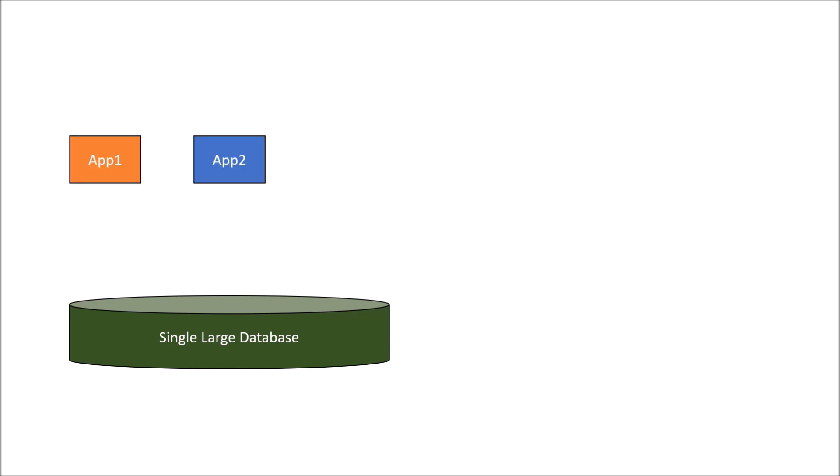In a monolithic architecture, we have a single large database. Suppose we have a single large database present here and instead of monolithic architecture, we have a small set of microservices - let's say app 1, app 2, app 3 - and all these microservices are connected to this single large database.